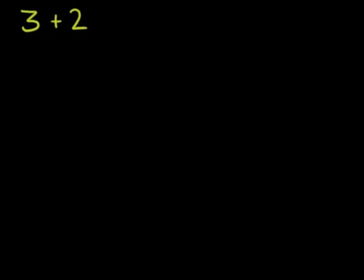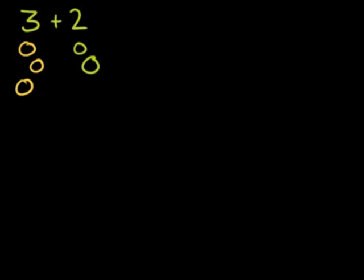In the last video, we got some practice adding smaller numbers. For example, if we added 3 plus 2, we could imagine I had 3 lemons — 1, 2, 3 — and if I were to add 2 more tart pieces of fruit, how much sour fruit do I have now? Well, we have 1, 2, 3, 4, 5 pieces of fruit. So 3 plus 2 is equal to 5.